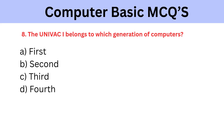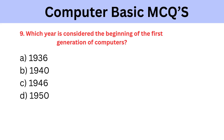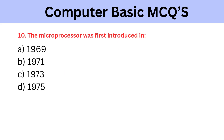The UNIVAC I belongs to which generation of computers? A) First, B) Second, C) Third, D) Fourth. The correct answer is First. Which year is considered the beginning of the first generation of computers? A) 1936, B) 1940, C) 1946, D) 1950. The correct answer is 1946.